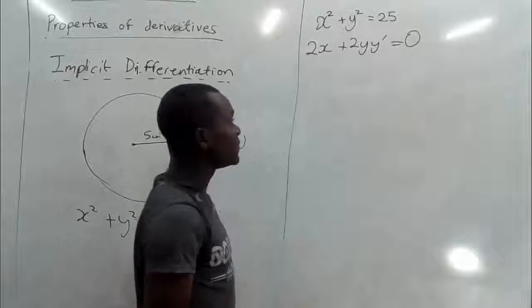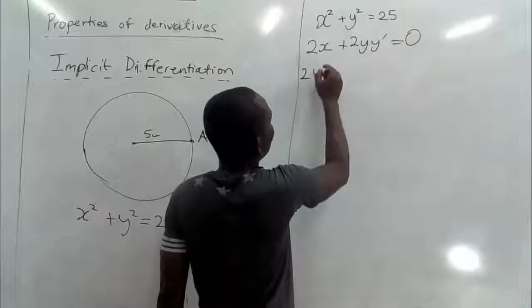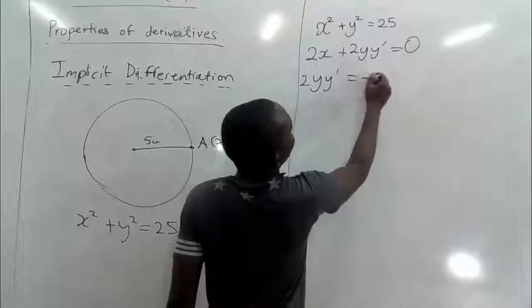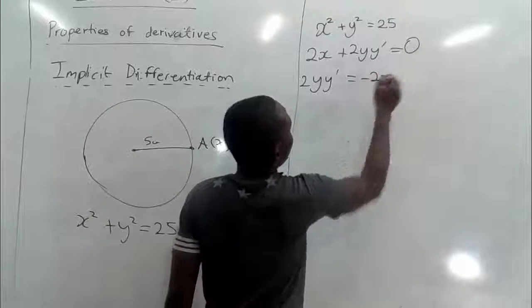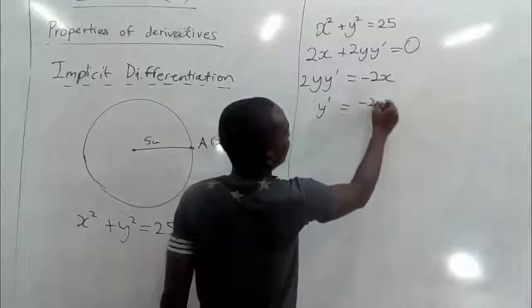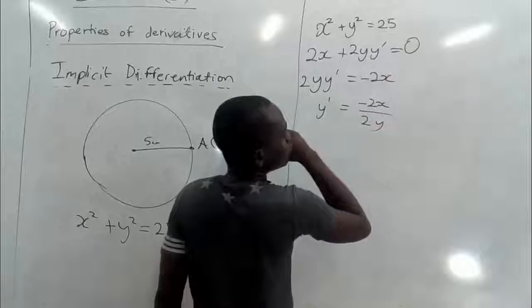So we want to make y prime the subject. That is the derivative we are talking about. So we have 2y y prime being equal to negative 2x. So y prime becomes negative 2x all over 2y.